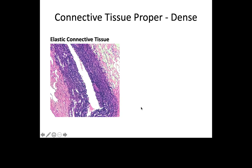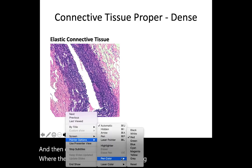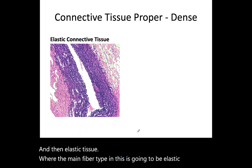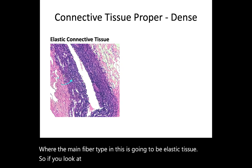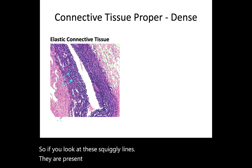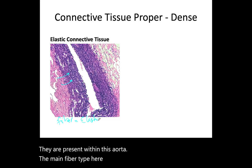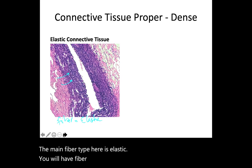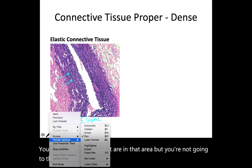Elastic tissue has elastic fibers as the main fiber type. If you look at these squiggly lines present within this aorta sample, the main fiber type here is elastic. You will have fibrocytes in that area, but they're not as recognizable and are harder to detect.